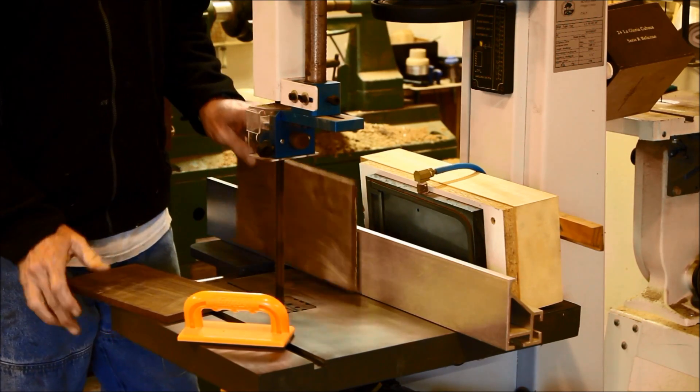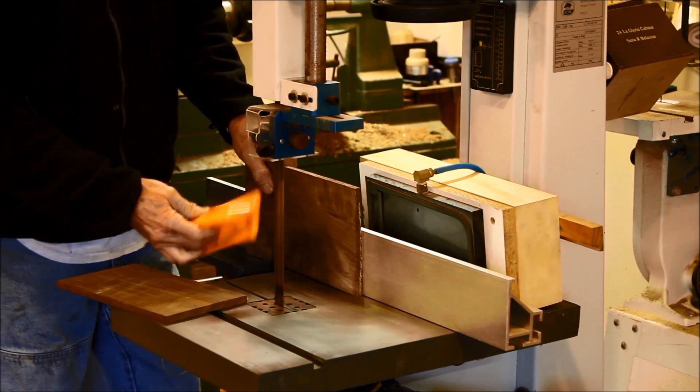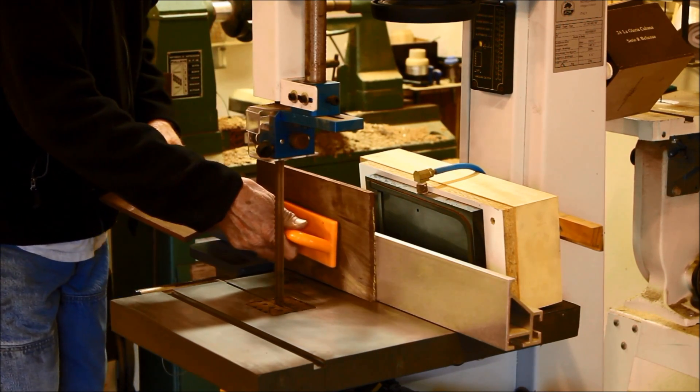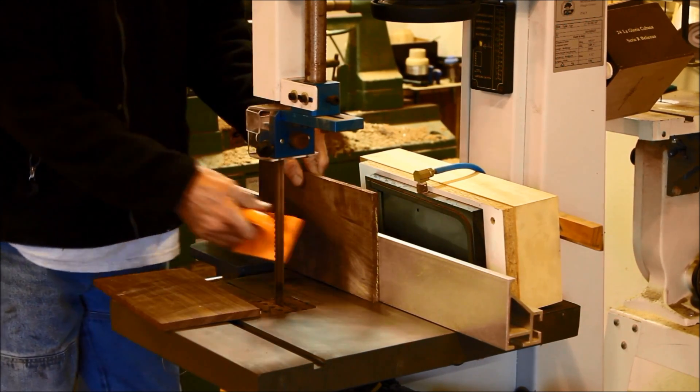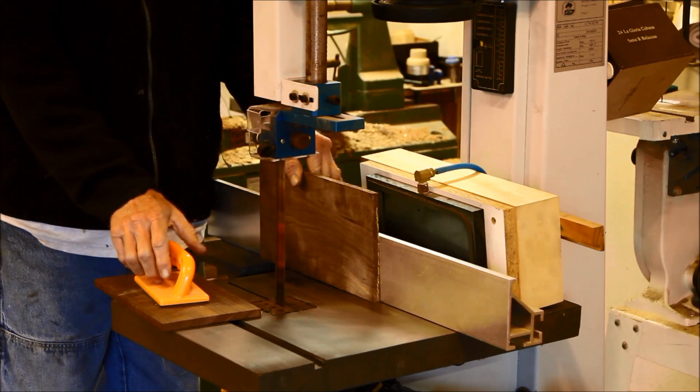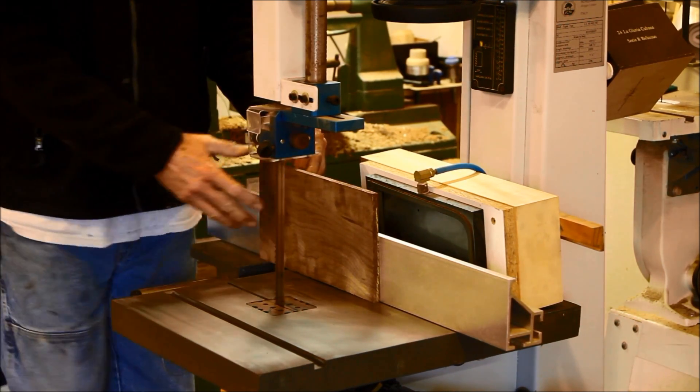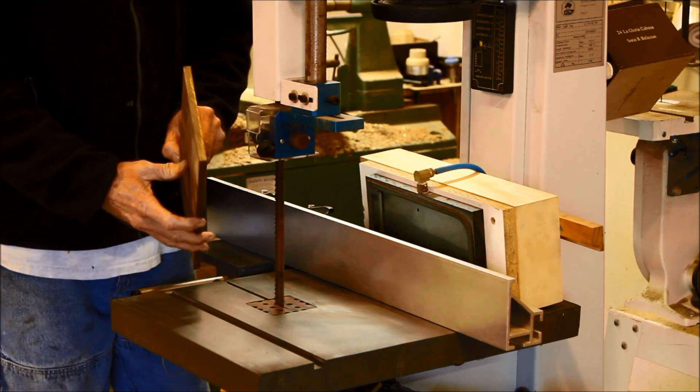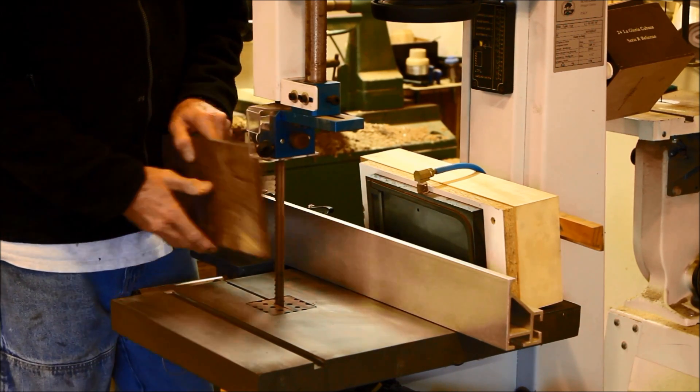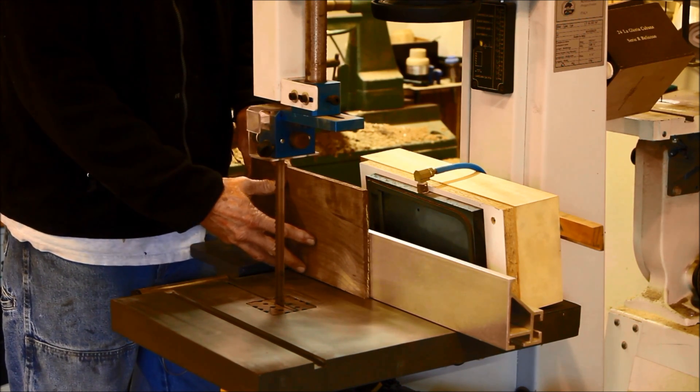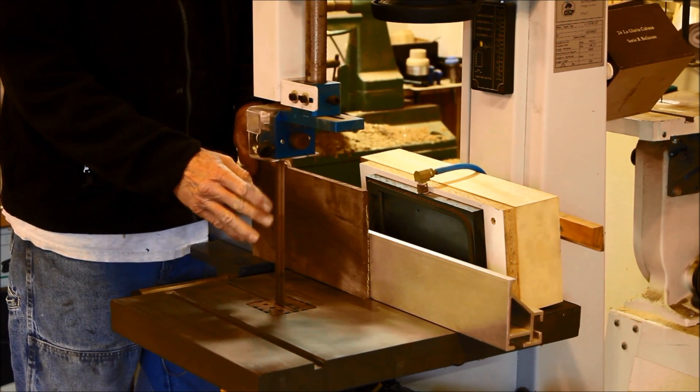Most of the time when people are re-sawing, they're having to hold it against the fence and use some sort of push block to push it through the saw. Both their hands are occupied. Especially with a board that's only three-eighths of an inch thick, you're going to get a lot of wobble. I don't care how much pressure you put to it, the blade is kicking down on it.